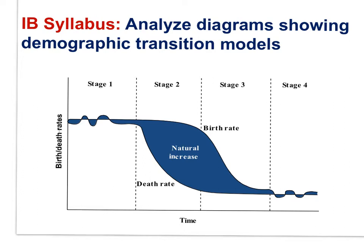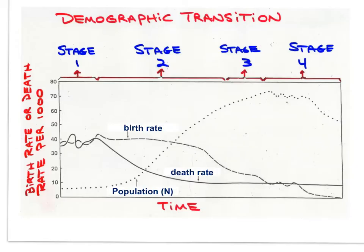However, some countries, particularly some in Africa, appear to remain in the pre-industrial stage, with high birth rates and high death rates. Other countries are already in the post-industrial stage, with birth rates below death rates and their population shrinking. Here is a graph of demographic transition that adds N — population size — as a third curve.